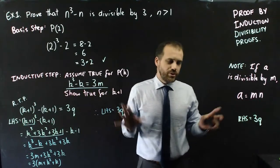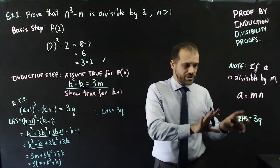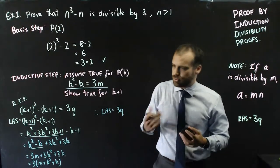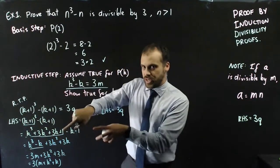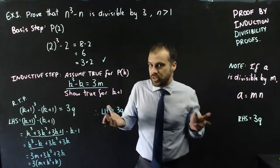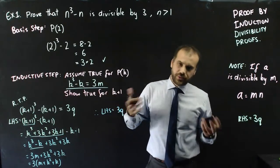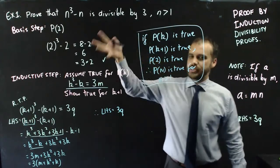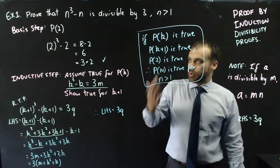The reason most maths teachers don't use a right-hand side in these is because the right-hand side doesn't really require any manipulation — you're just looking at it saying that's what I'm aiming for: 3 times something, or 7 times something, whatever the divisibility proof is. You're working down the left-hand side looking for that golden opportunity to put in something you know, then factorize so the divisibility factor is outside the bracket. If pk is true, pk plus 1 is true, and p2 is true — therefore pn is true for n greater than 1. Proven.